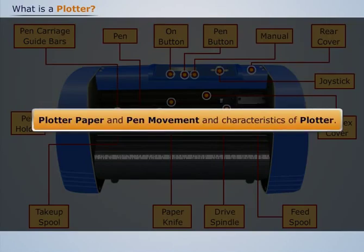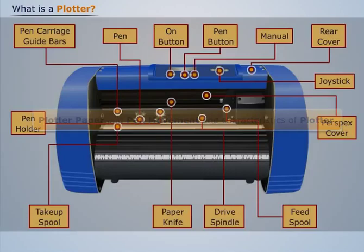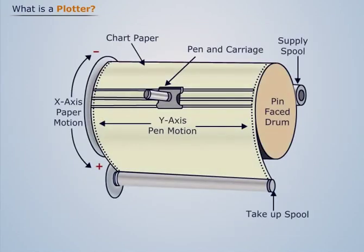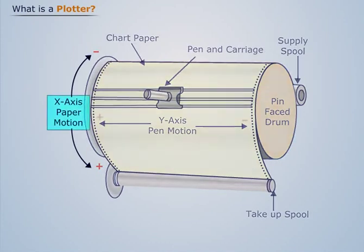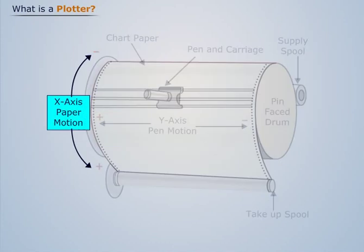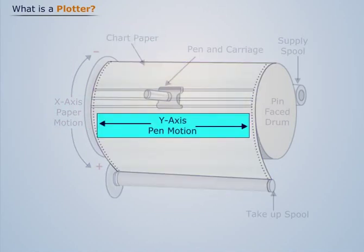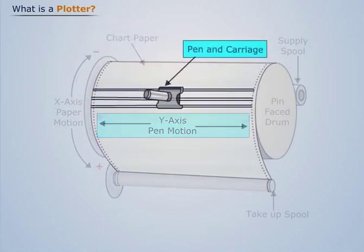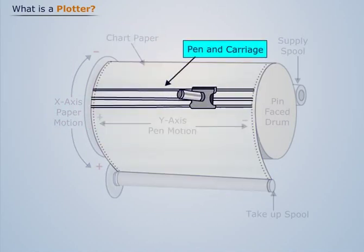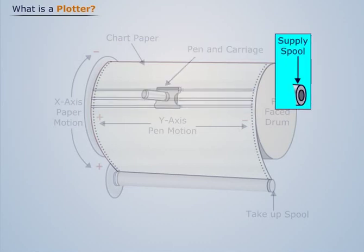Now discussing further about the plotter paper and pen movement and characteristics of the plotter. The plotter paper and pen movement is done with the help of six elements: x-axis paper motion, chart paper, y-axis pen motion, pen and carriage, supply spool, and take up spool.